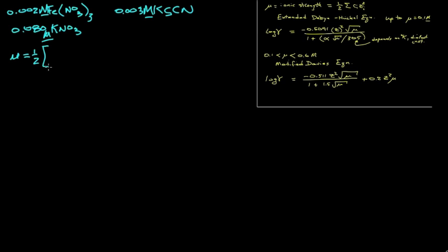It will be just half of the sum of all the ions times their respective charges squared. So we are going to need the iron times its charge squared. That's three squared or nine. We'll add to that the concentration of the nitrate and its charge squared. We'll add then the potassium ion times its charge, which would be plus one squared. And then finally we need the concentration of the thiocyanate times its charge, or minus one squared.